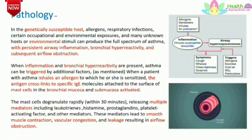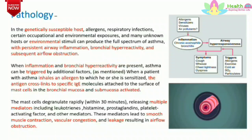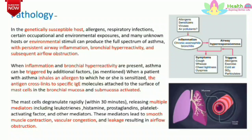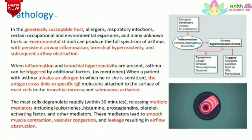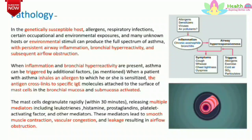When inflammation and bronchial hyperactivity are present, asthma can be triggered by additional factors. When a patient inhales an allergen to which they are sensitized, the antigen cross-links specific IgE molecules attached to the surface of mast cells in the bronchial mucosa and submucosa, activating them. The mast cells degranulate rapidly and release multiple mediators like leukotrienes, histamine, prostaglandins, platelet activating factors and other mediators, leading to smooth muscle contraction, vascular congestion and leakage resulting in airflow obstruction.